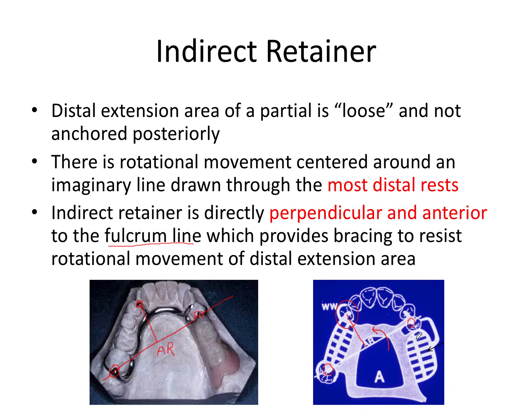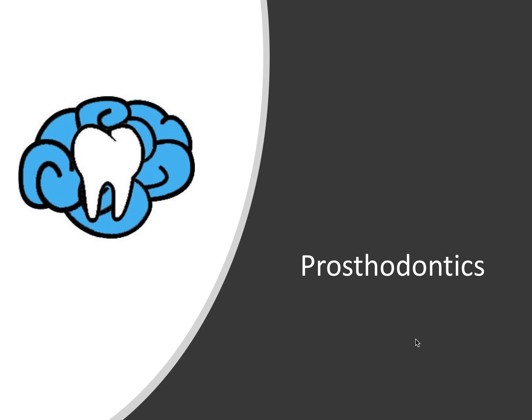There's also something called a direct retainer, which we'll talk about in the next video on clasps. The indirect retainer and the direct retainers of a partial together prevent displacement of the denture base in an occlusal direction — in other words, they both together provide retention for the partial so it doesn't fall out on the patient. Thanks so much for watching; stay tuned for the next video on clasp design and selection.